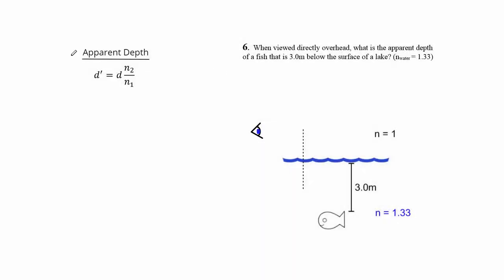The next topic we need to discuss is called apparent depth. The idea is that if an object and an observer observing that object are each in a different medium, then as the light travels from one medium to the other, refraction is going to take place, and it's going to make that object appear to be actually at a different depth in that medium than it actually is.